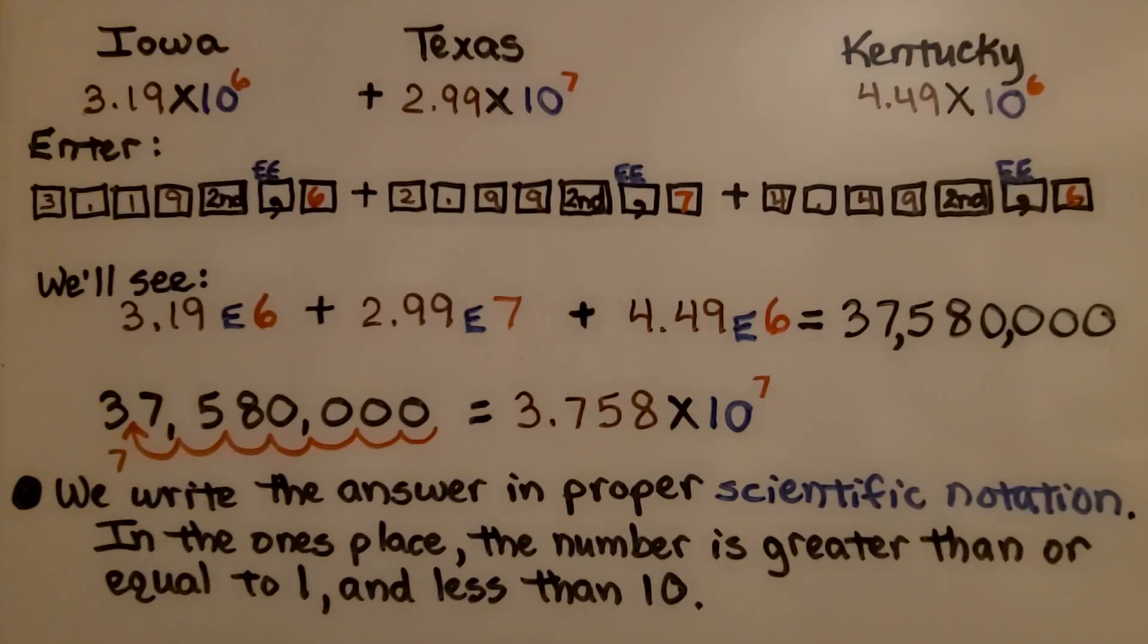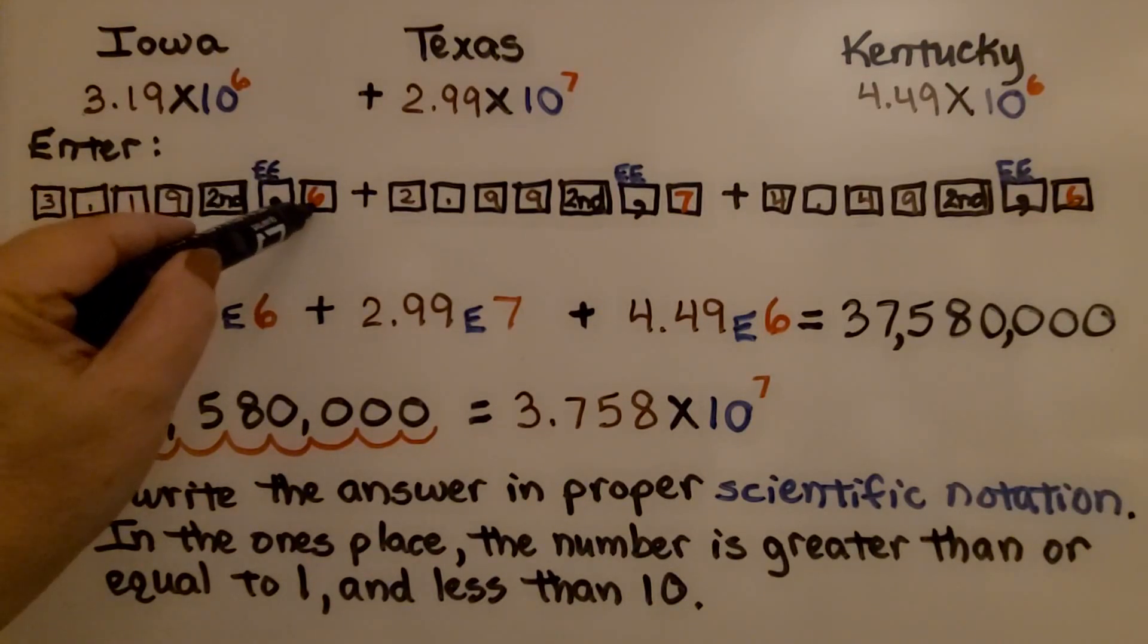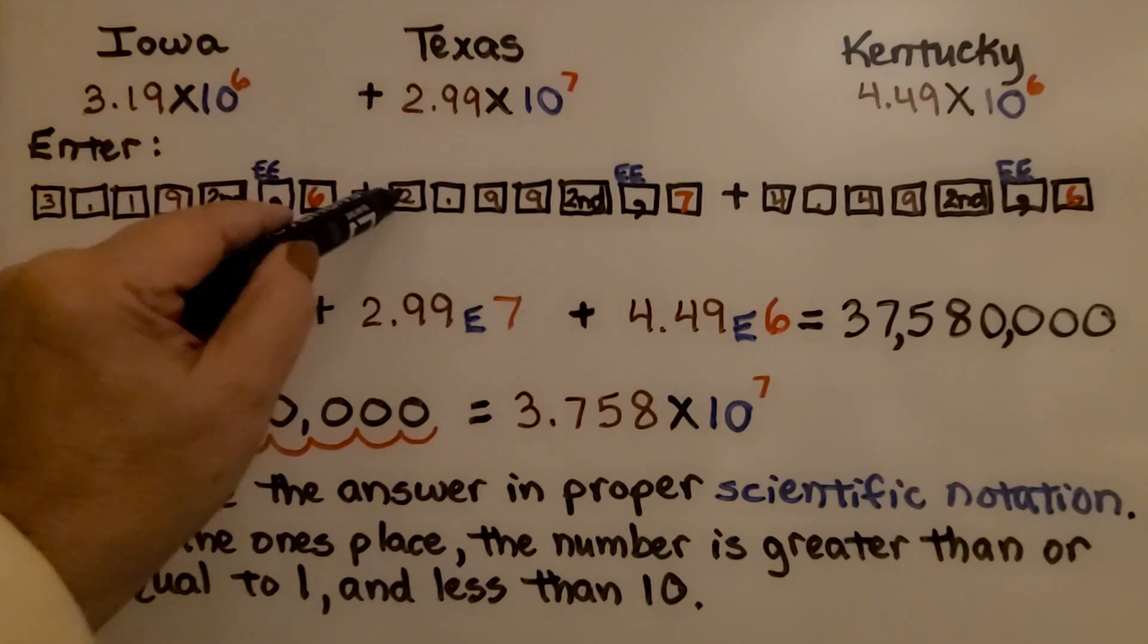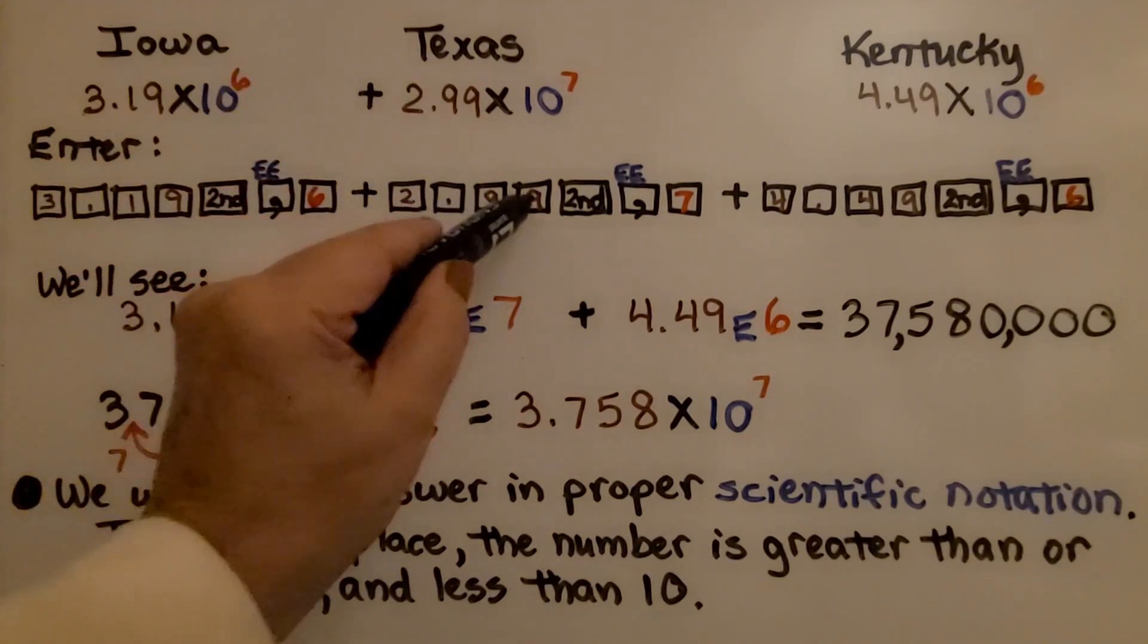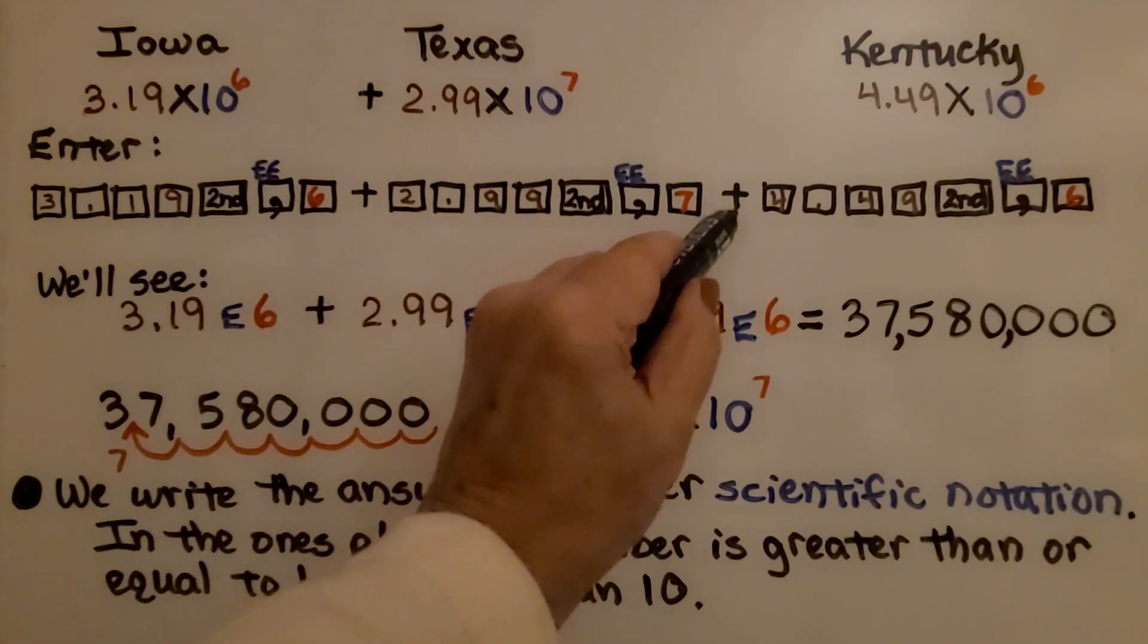To add these scientific notation numbers on a calculator for Iowa, we're going to enter 3.19. We're going to hit the second key, then we're going to hit that comma key that has the EE above it, then we're going to hit 6. We hit the plus sign, and we enter Texas. 2.99, hit the second key, hit the comma key with the EE above it, and hit 7. Hit the plus sign again.